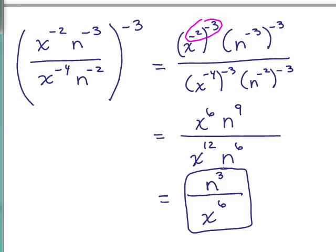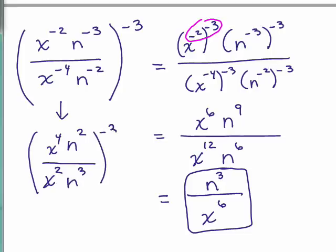Notice you could have done this by taking everything inside the parentheses first and switch places for all the negative exponents, making them positive by putting it in the numerator or if they were in the denominator and vice versa. And then you could use that rule, take the reciprocal and put it to the positive 3. So then you're back up to x squared, n cubed over x to the 4, n squared, to the positive 3.